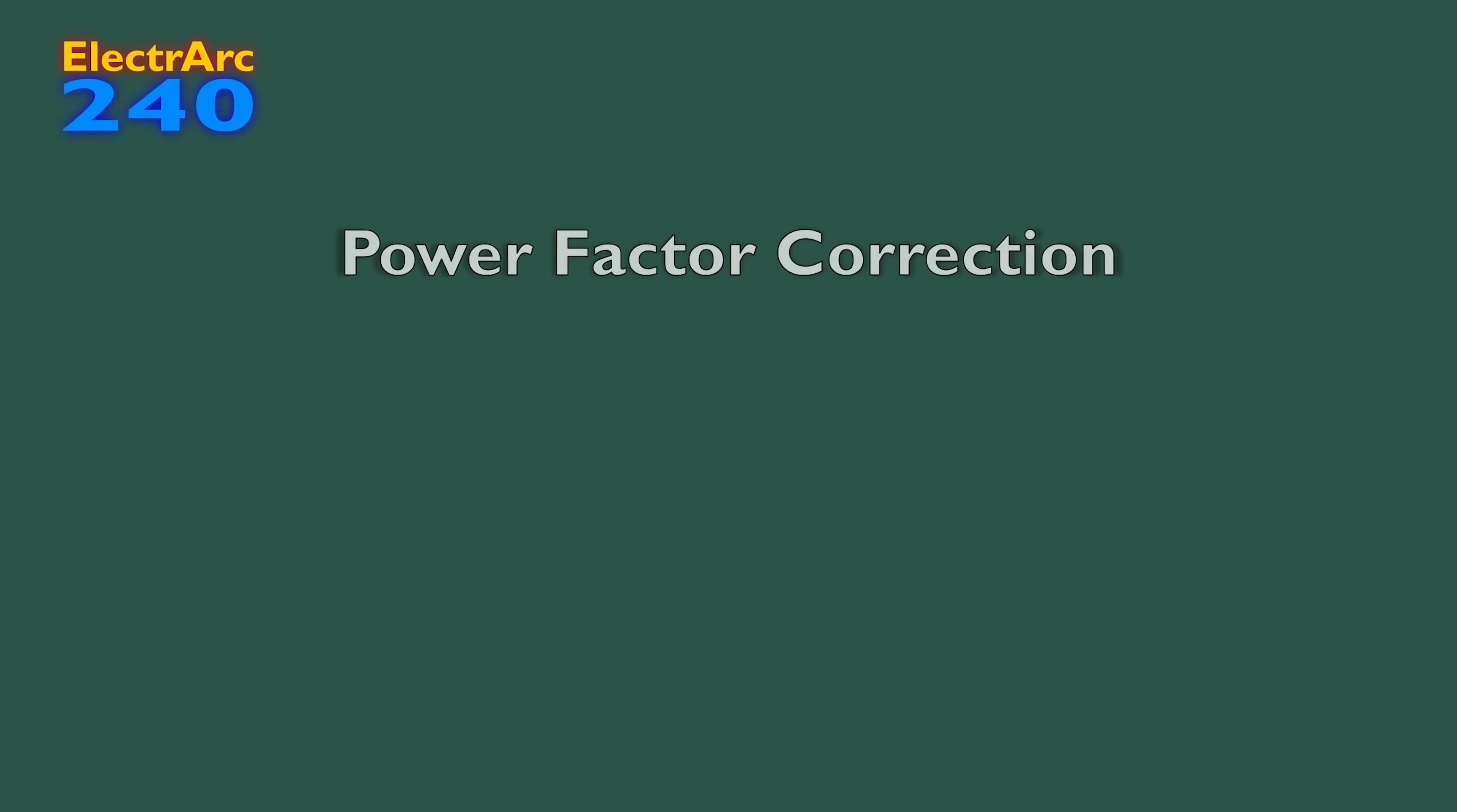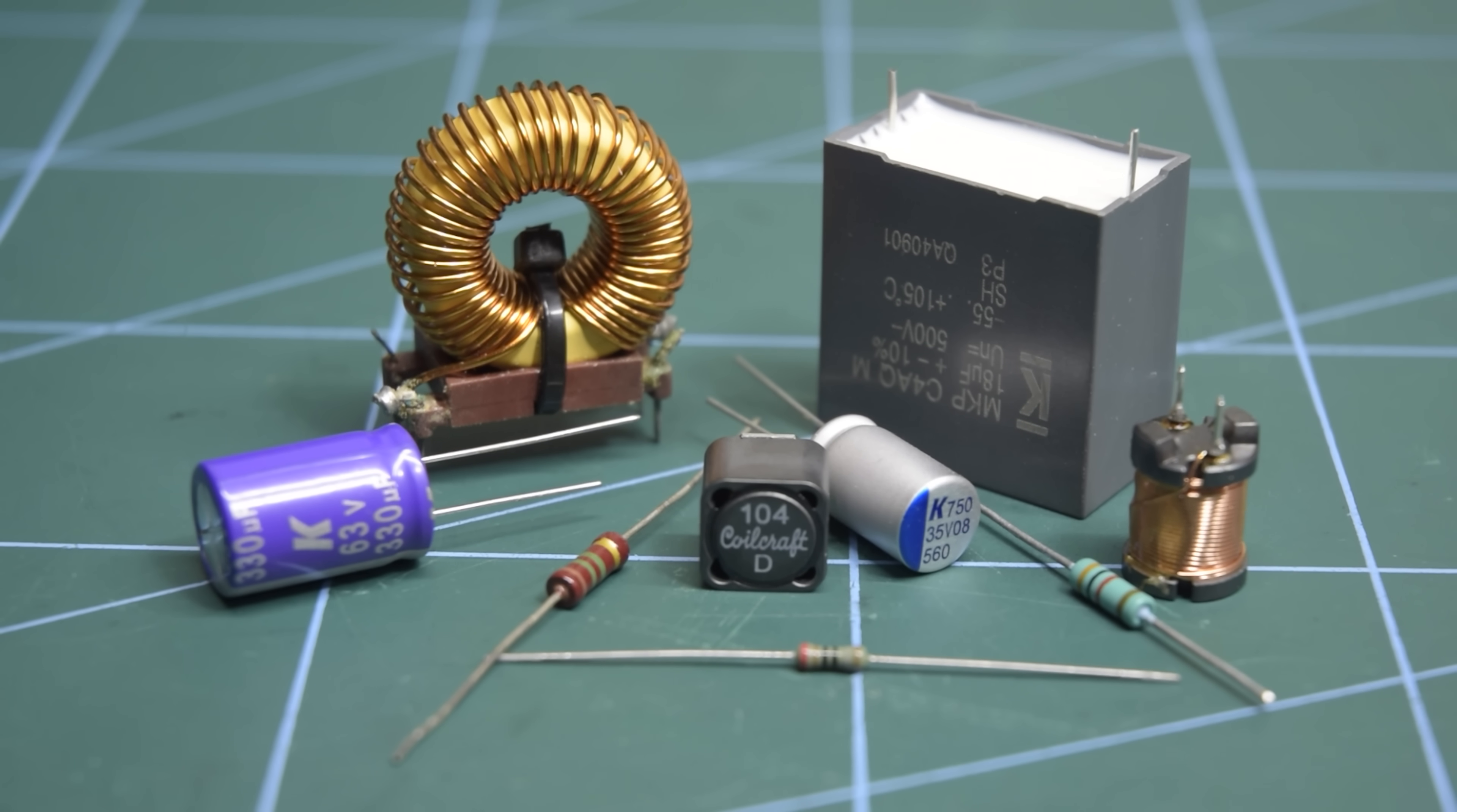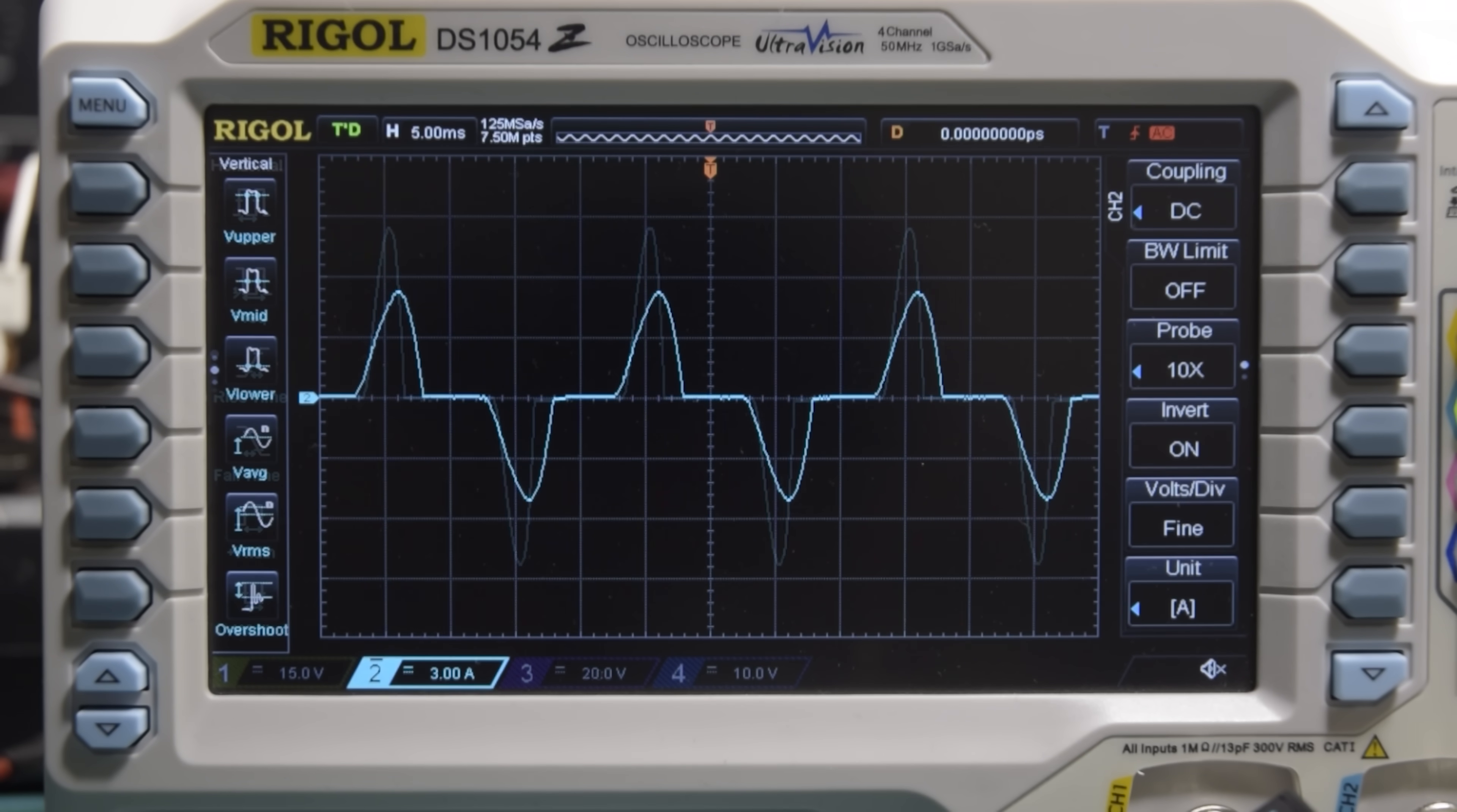We can split PFC into two main categories, passive and active. Passive power factor correction just adds a few extra passive components to try and somewhat smooth out the current spikes. In its simplest form, it's just an inductor in series with the rectifier. As inductors slow down changes in current, we can use one here to flatten and widen the current spike, and prolong the period of current draw. We can see that while this is certainly an improvement over the bare rectifier, our current draw is still definitely not sinusoidal, and our power factor is only increased to 0.7.